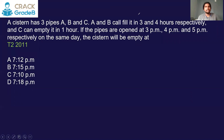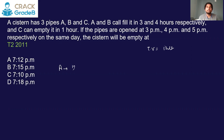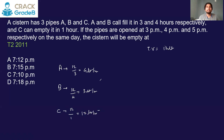A system has three pipes: A and B can fill it in 3 and 4 hours respectively, and C can empty it in 1 hour. Common multiple of 3, 4, and 1 is 12 liters total volume. Rate of A = 12/3 = 4 liters per hour; rate of B = 12/4 = 3 liters per hour; rate of C = 12/1 = 12 liters per hour (emptying).